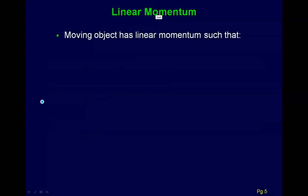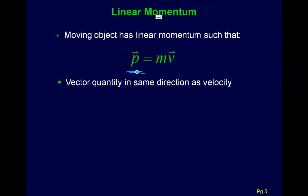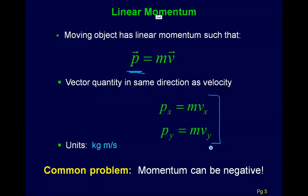Linear momentum is defined with the letter P. So I apologize for that - we're running out of letters here to use for our quantities. So P is equal to the mass times velocity. So a moving object has a linear momentum. This is a vector quantity in the same direction as the velocity. The units are mass times velocity, so units will be kilogram meters per second. And what we'll do a lot of times is we'll break this up to look at the vector components - the X, the Y, possibly the Z direction if necessary. One thing to keep aware of is that momentum can be negative. This will be something that can trip you up sometimes, so be careful.